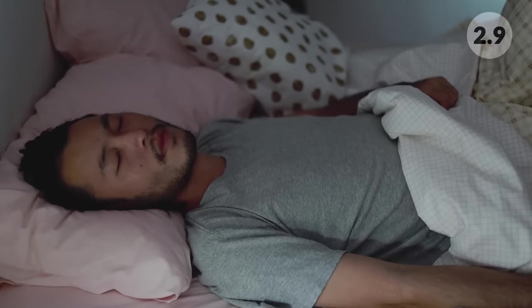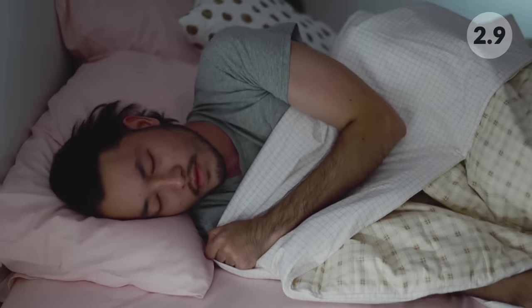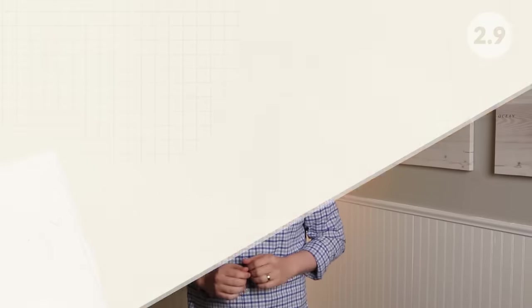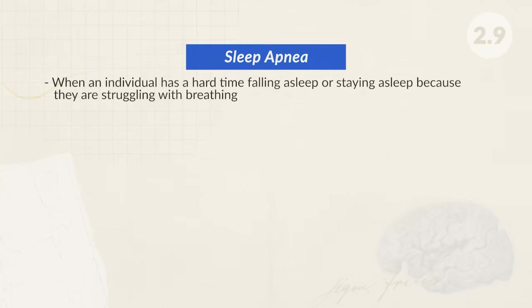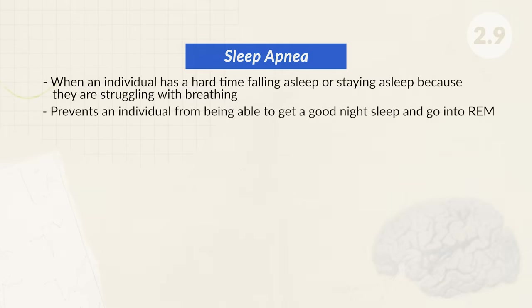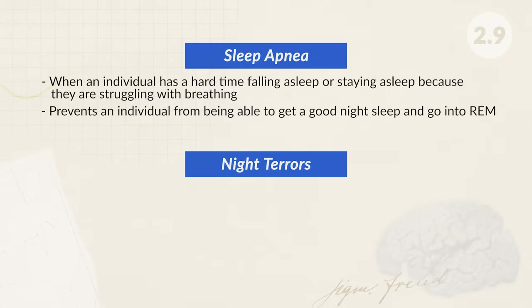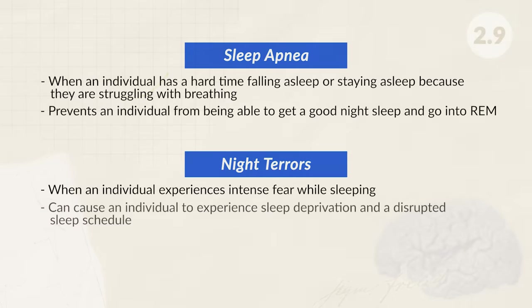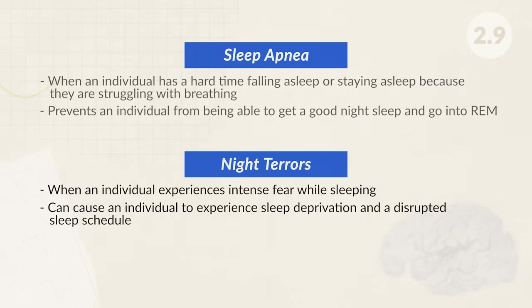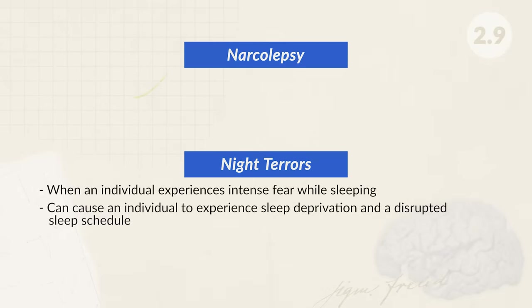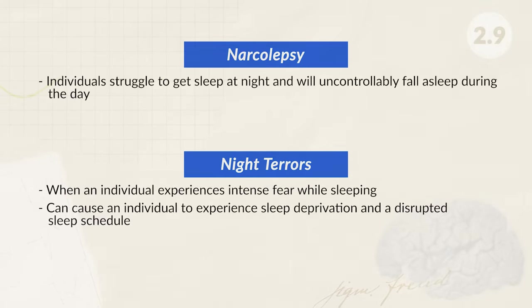We all need sleep, but unfortunately sometimes we can struggle with falling asleep or staying asleep. Many people suffer at some point with insomnia — a sleeping disorder where an individual has trouble falling asleep or staying asleep, which can be caused by stress, pain, medication, or an irregular sleeping schedule. Others struggle with sleep apnea, when an individual has a hard time sleeping because they are struggling with their breathing, which prevents them from getting a good night's sleep and going into REM. There are also sleep terrors or night terrors, where an individual experiences intense fear while sleeping, causing sleep deprivation and a disrupted sleep schedule. Lastly, though rare, there is narcolepsy — where individuals struggle to sleep at night and will uncontrollably fall asleep during the day.